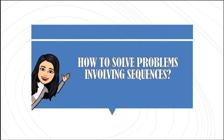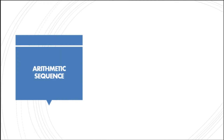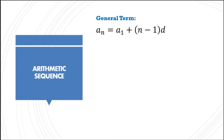We will talk about the general term, means, and series formulas. For arithmetic sequence, the general term is: a sub n equals a sub 1 plus the quantity (n minus 1) multiplied by d. Here, a sub n is the general term, a sub 1 is the first term, and d is the common difference. We get the common difference by subtracting two consecutive terms — for example, a sub 2 minus a sub 1, or a sub 3 minus a sub 2.